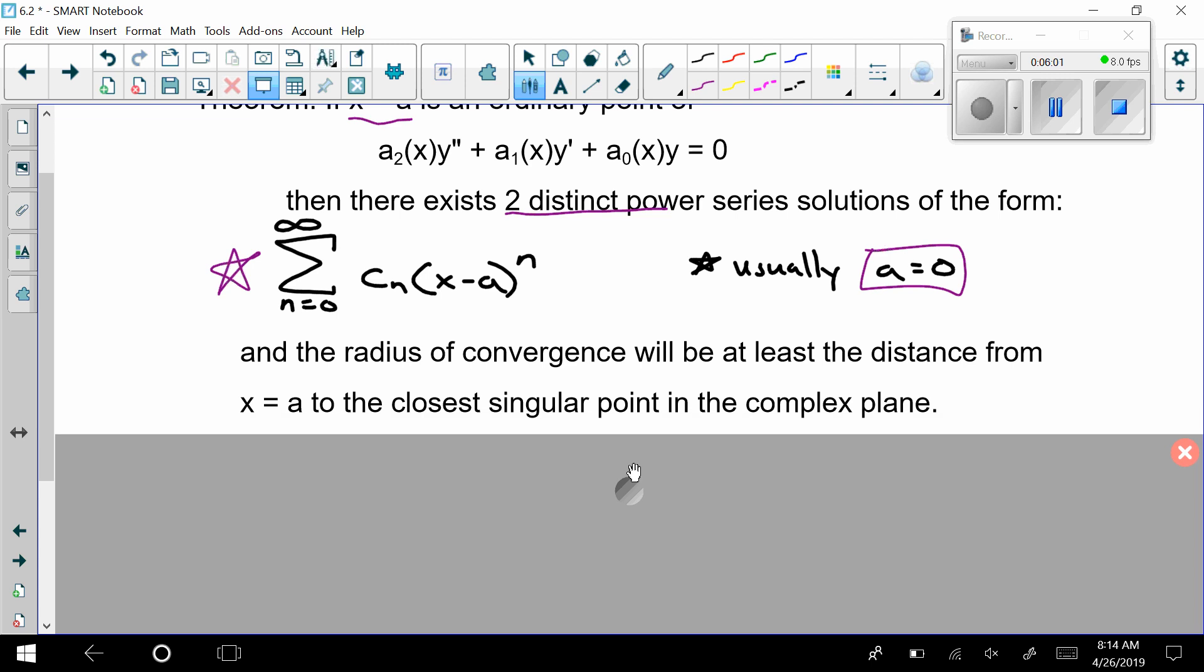And it does say the radius of convergence will be at least the distance from that point to the closest singular point in the complex plane. It's important to realize that complex plane means that I have the reals by the imaginaries.